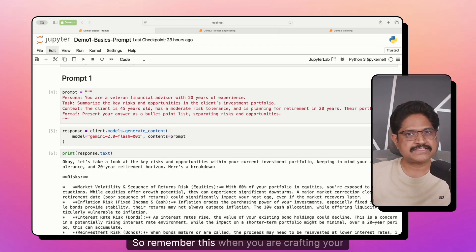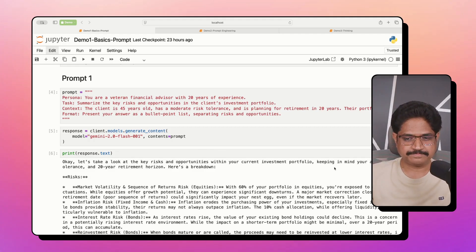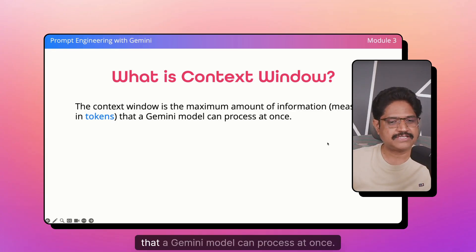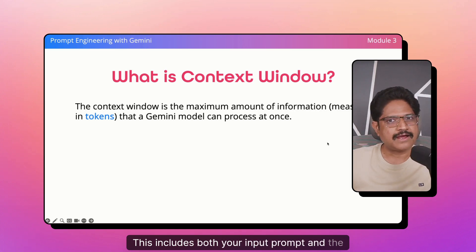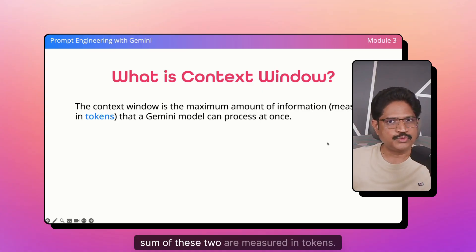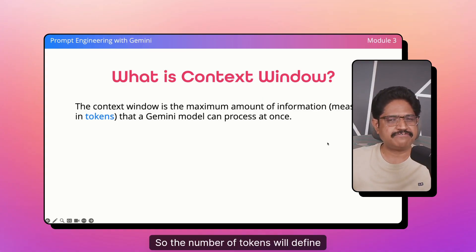Remember this when crafting your prompts — not just for Gemini, but any LLM will work better when you follow this structure. While defining the prompt, it's also important to understand the concept of a context window. The context window is the maximum amount of information that a Gemini model can process at once. This includes both your input prompt and the content the LLM is generating. The sum of these two is measured in tokens. Think of a token as roughly 75% of a word, and the number of tokens defines the actual context window size.